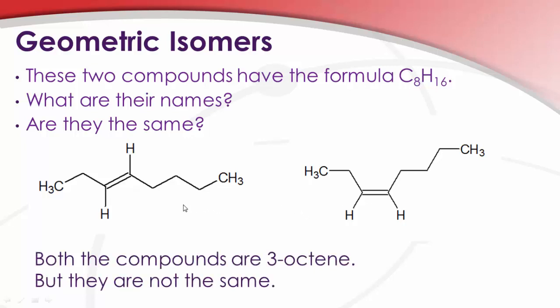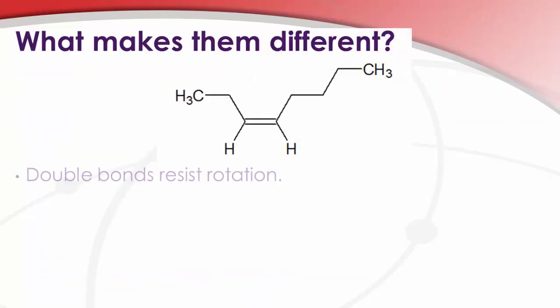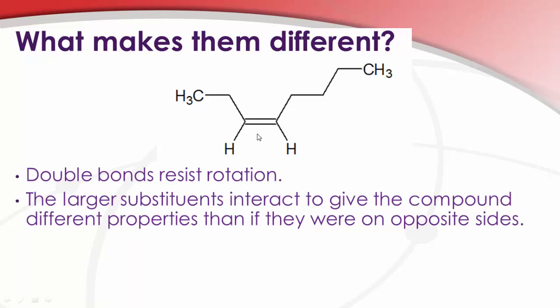So why aren't they the same compound? Well, we can see that in this case, one hydrogen is pointed down and one up. And in this one, both of them are pointed down. If this were not a double bond here, this molecule could rotate and these would be absolutely equivalent. But because we can't rotate this, these are stuck in this conformation. So the double bonds then resist rotation and prevent us from interchanging between those two compounds.